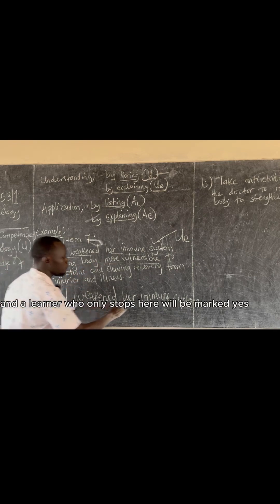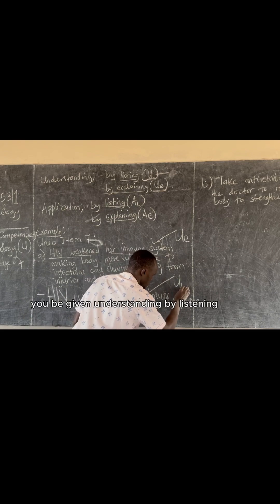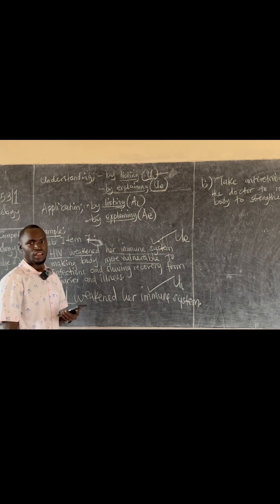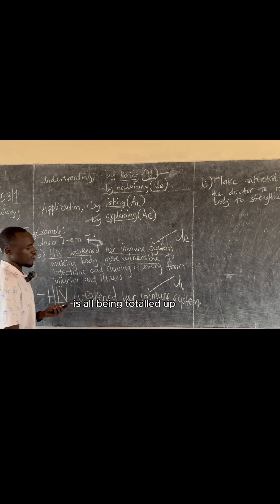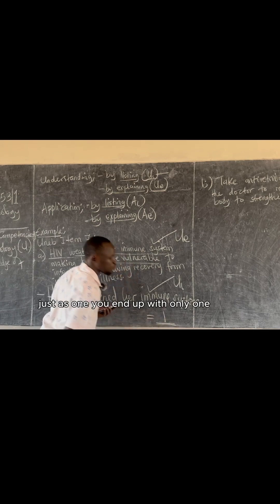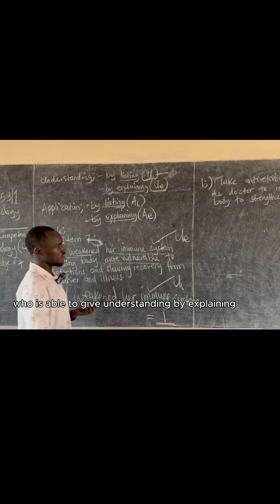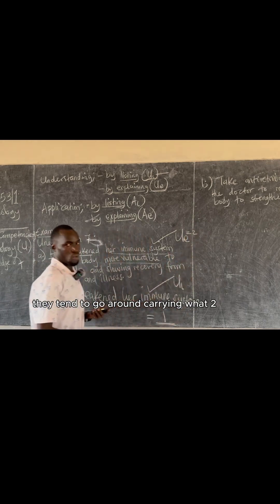A learner who has stopped at that level will be marked as right, but will be given understanding by listening, which is the lowest level. Every point given for understanding by listening is totaled up as just one. A learner who is able to give understanding by explaining tends to carry two marks.